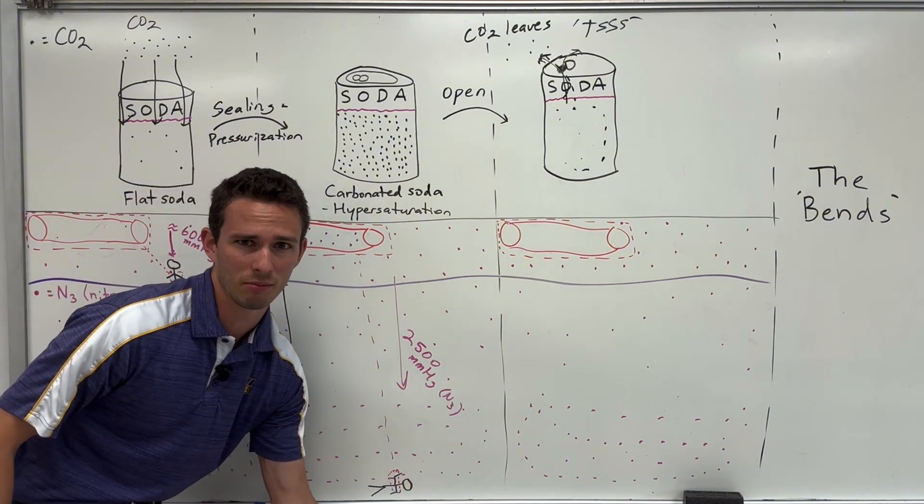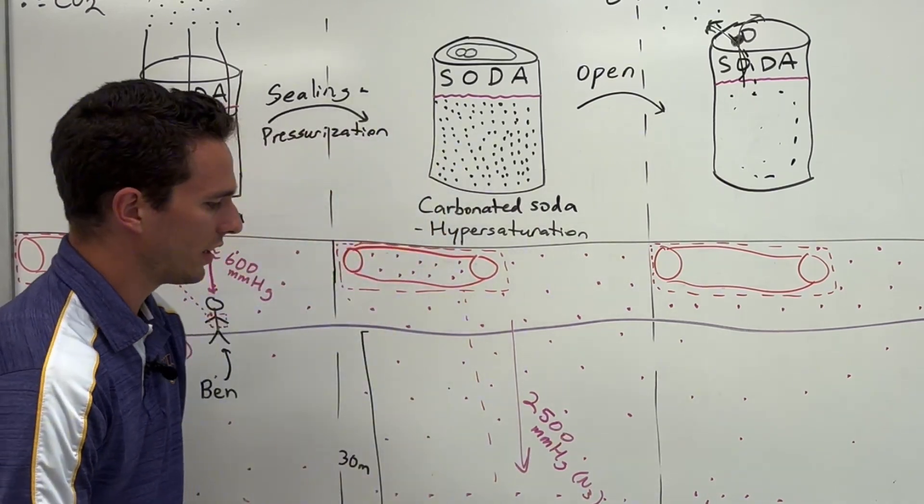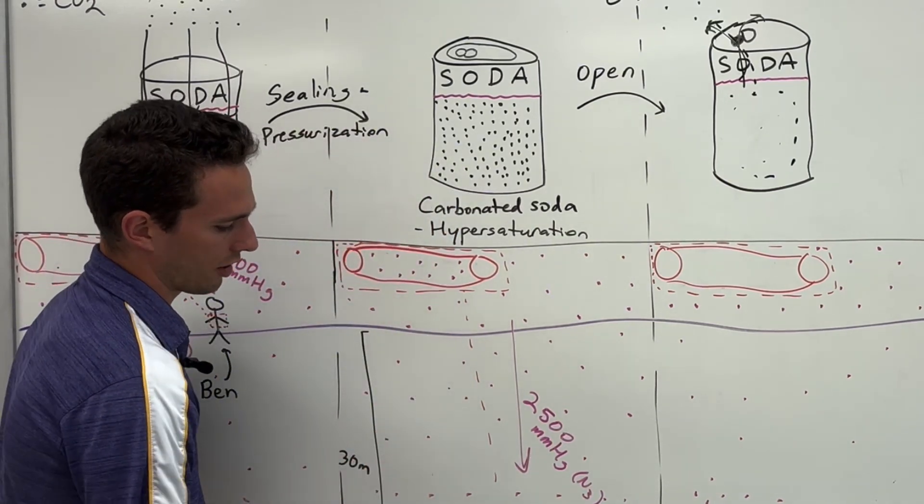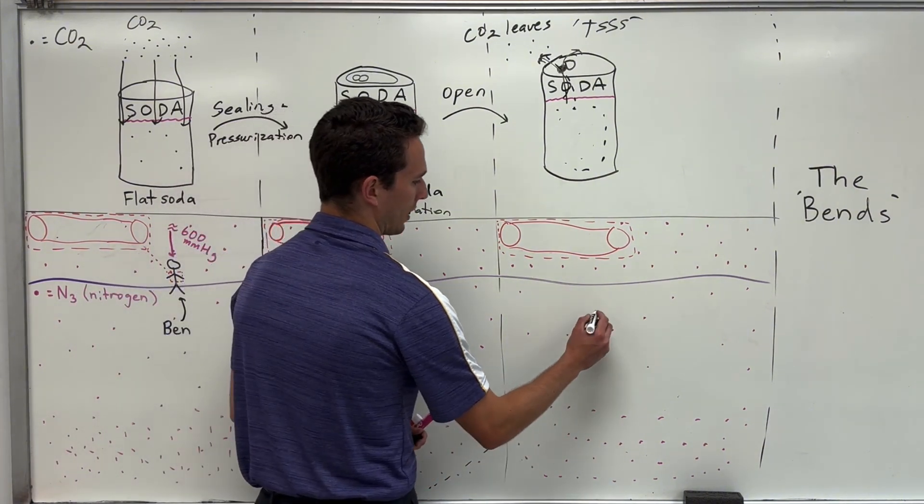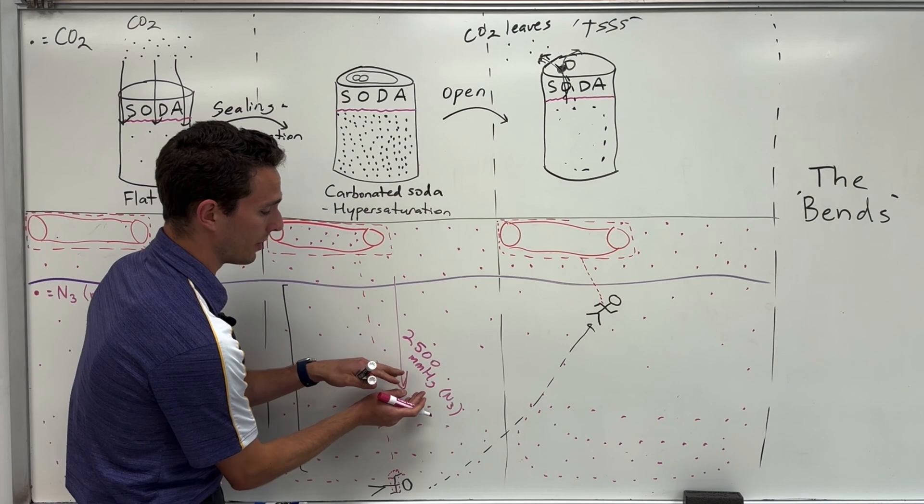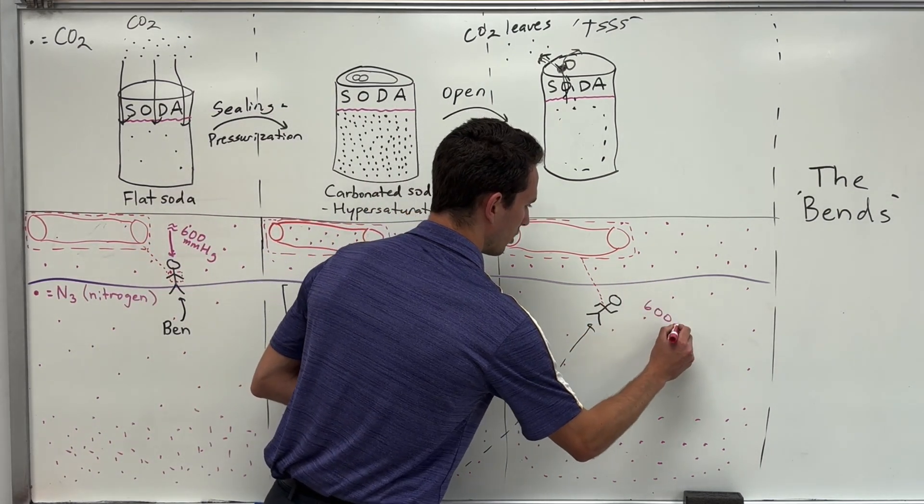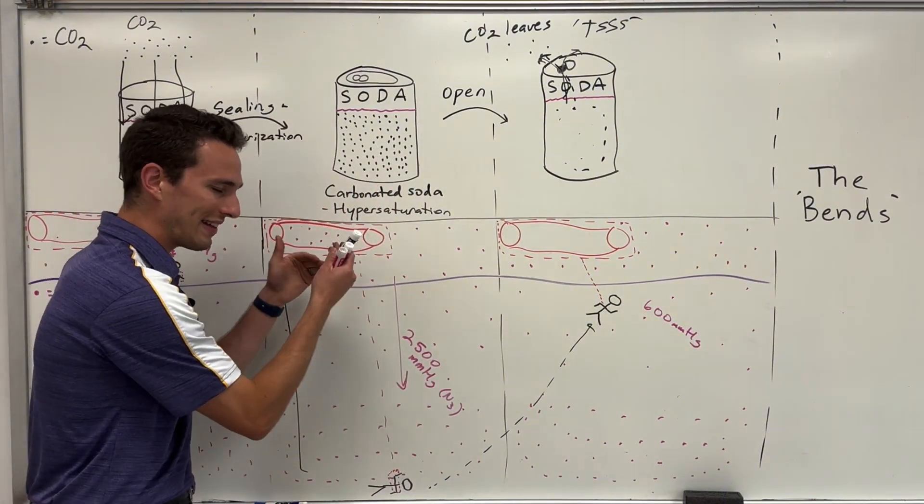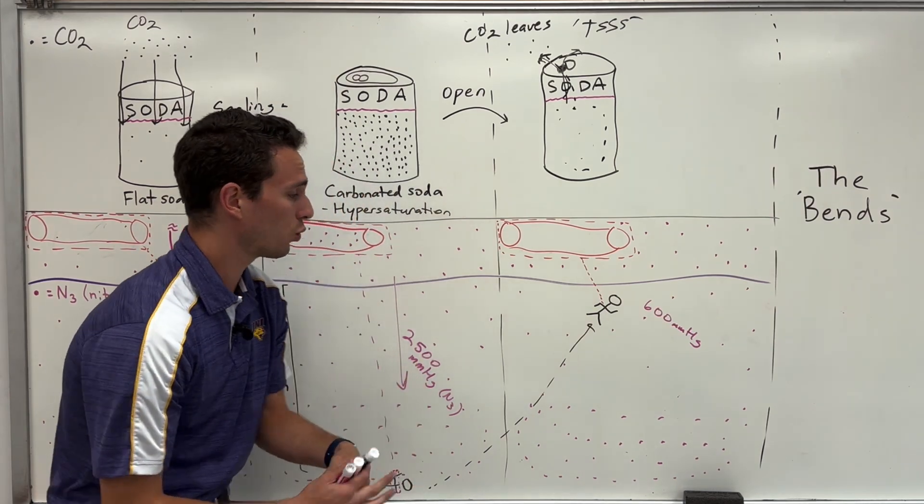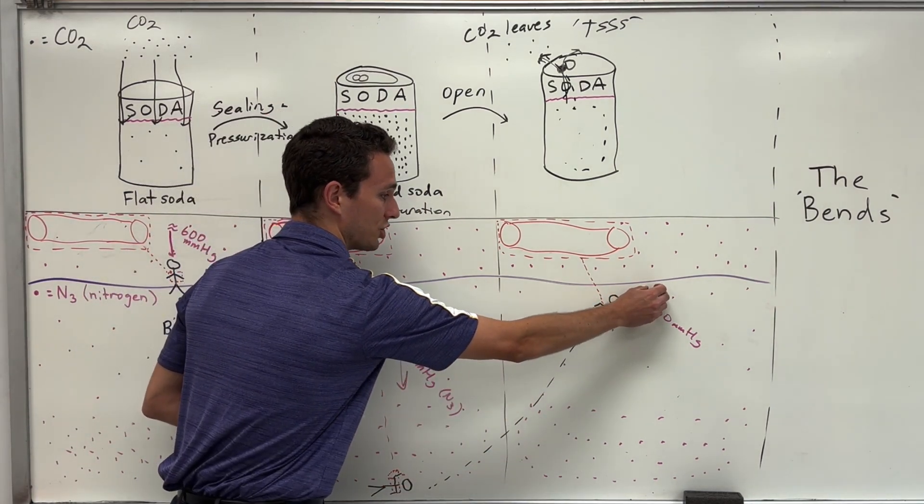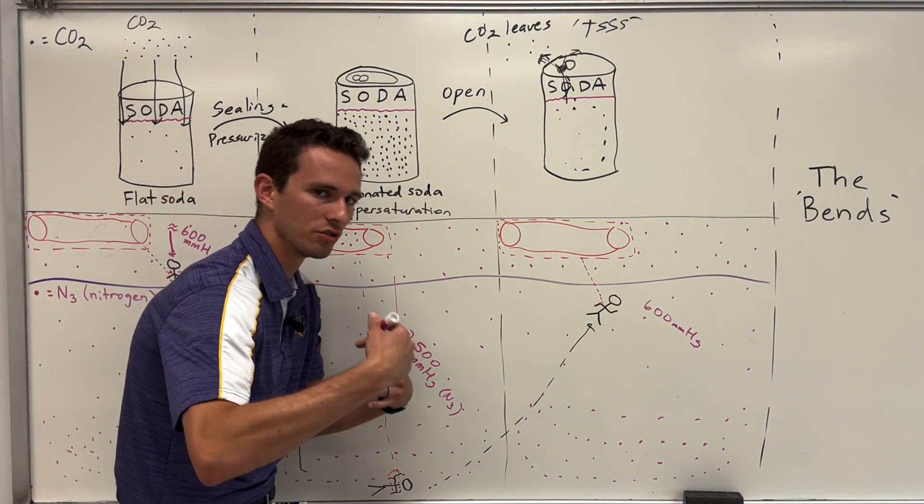But the problem becomes when he begins to come up for air. So let's say Ben decides that he's going to swim all the way back up here very quickly. So now he's gone from an environment of 2,500 millimeters of mercury, and now he's back to that 600 at the surface. But the thing is, his bloodstream is relatively concentrated with that nitrogen. So this becomes a problem. Because once he comes up to a very low amount of nitrogen, coming from a high amount, where does all the nitrogen in his blood want to go?